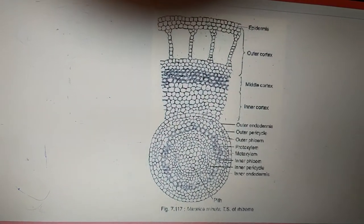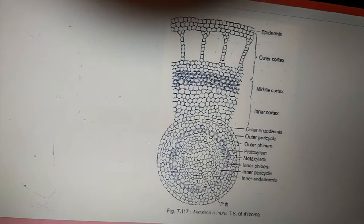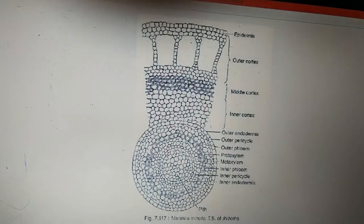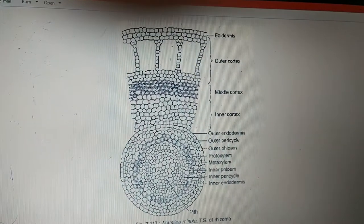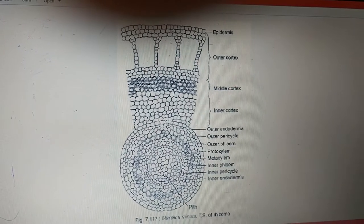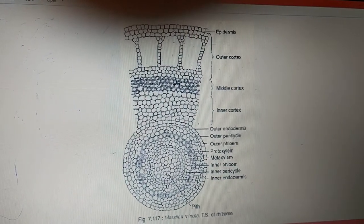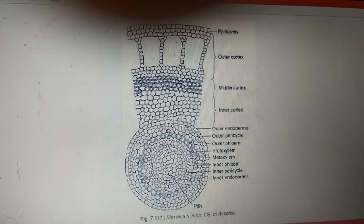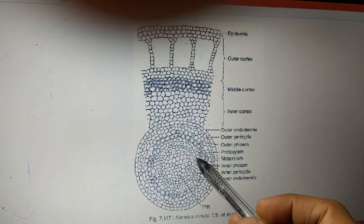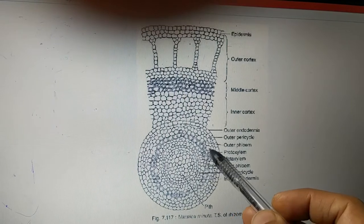Now speaking about the stele, the stele is amphifloic solenostele. Amphifloic in the sense amphi is two, phloic is phloem. So there is a presence of two phloem. We have a xylem, xylem is surrounded by two phloems, the inner phloem and outer phloem.